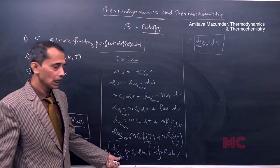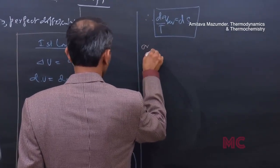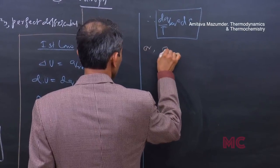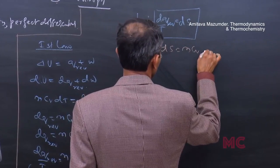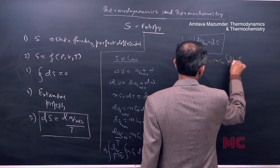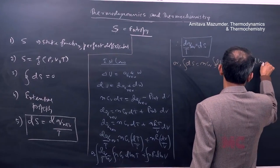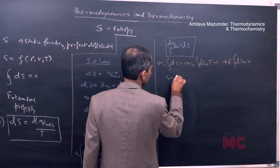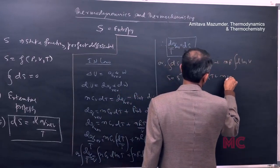Using the ideal gas equation and integration, dS equals nCᵥ d(lnT) plus nR d(lnV). Integrating this whole process gives S equals S₀ plus nCᵥ ln(T) plus nR ln(V), where S₀ is the integration constant.